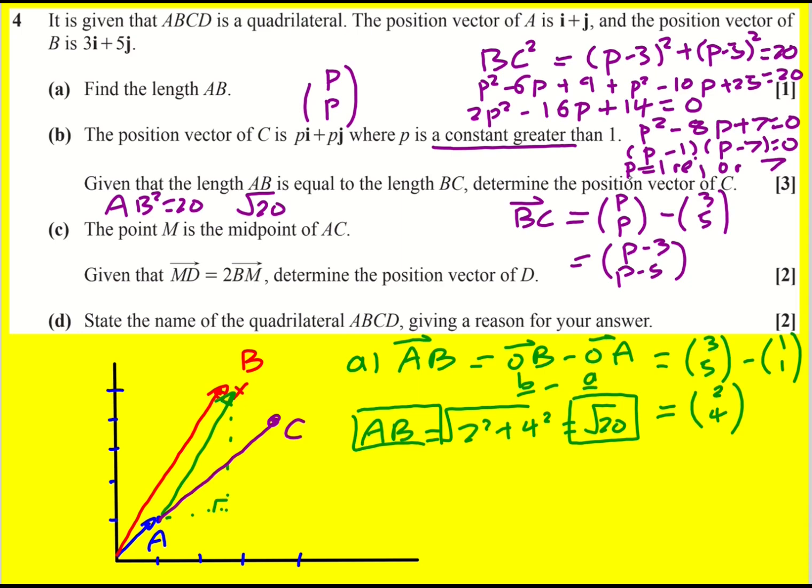So that means that the position vector of c is going to be 7, 7. I'll just write OC equals 7, 7. Good. So 7, 7 actually means that I'm going to need to move it quite further forward. 1, 2, 3, 4, 5, 6, 7. Yeah, maybe around about here. Okay, if I'm trying to keep my sketch reasonably accurate. All right, on to the next bit.